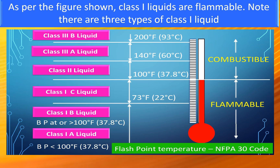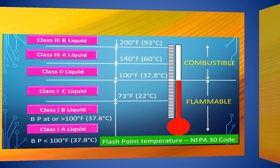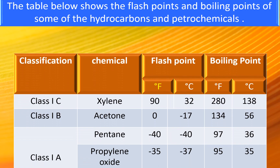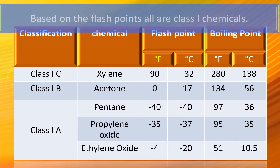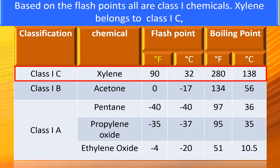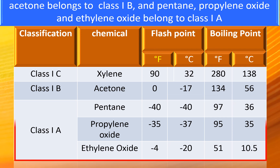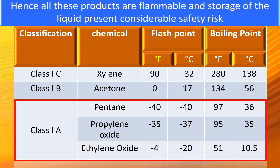As per the figure shown, Class 1 liquids are flammable. There are three types of Class 1 liquid: Class 1A, Class 1B, and Class 1C, based on the temperature ranges shown. The table below shows the flash points and boiling points of some hydrocarbons and petrochemicals. Based on the flash points, all are Class 1 chemicals. Xylene belongs to Class 1C, acetone belongs to Class 1B, and pentane, propylene oxide, and ethylene oxide belong to Class 1A. Hence, all these products are flammable liquids, and storage of these liquids presents considerable safety risk.